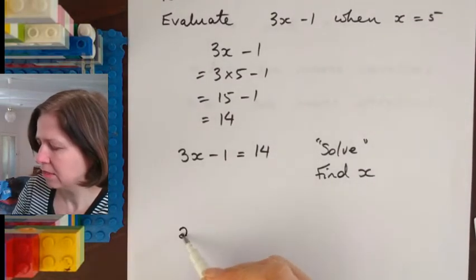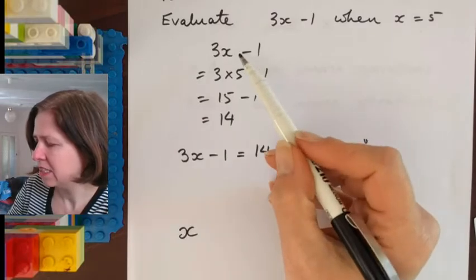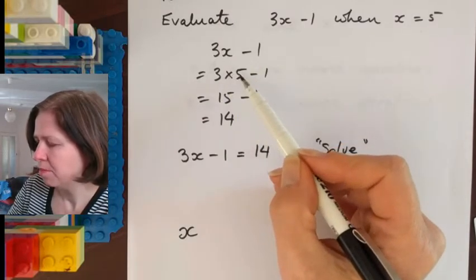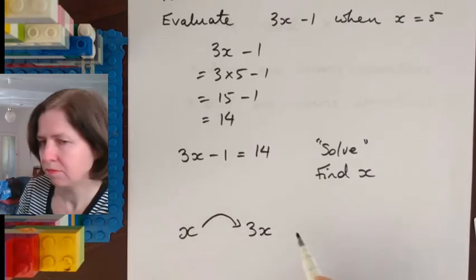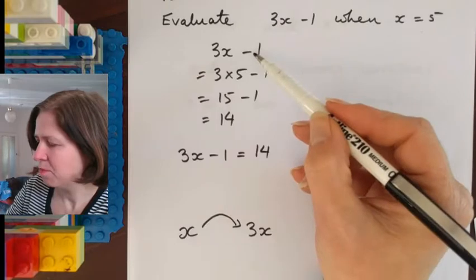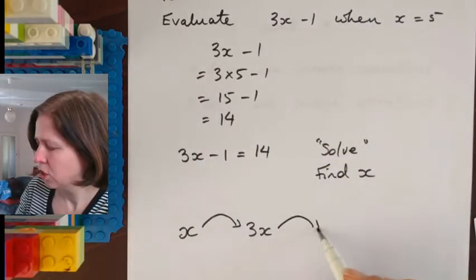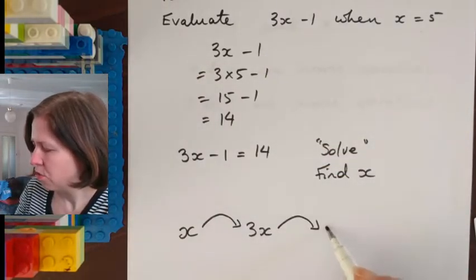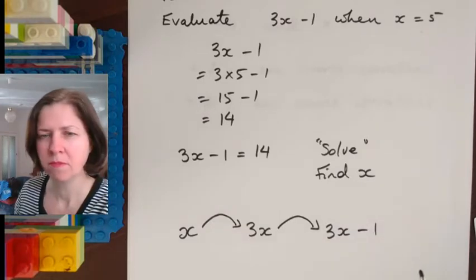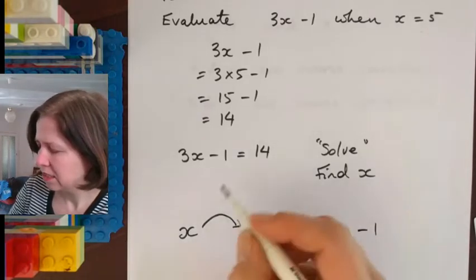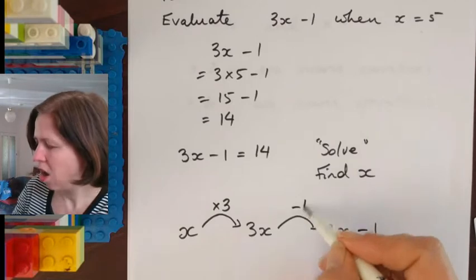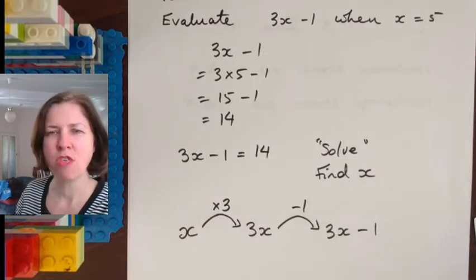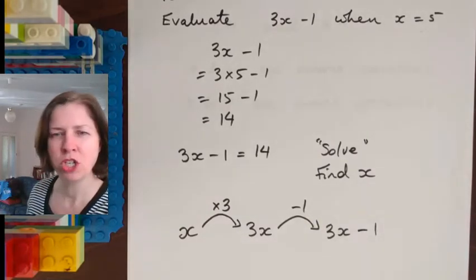So the first stage we're looking at is this. I start with x. The next thing I have is 3 times my x value. So the next thing I did was I had 3x. And then the last step is this subtraction of 1 which gives me 3x minus 1. So I start with x, I multiply it by 3 to get 3x and then I subtract 1 to get 3x minus 1.